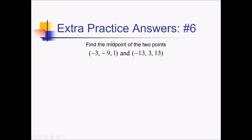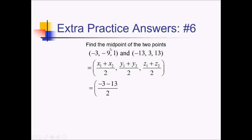On this problem, we're trying to find the midpoint of these two points, so we're essentially going to average all the x, y, and z values together. We've got (x1 plus x2) over 2, and the same thing for the y values and the z values. So then we've got (negative 3 plus negative 13) over 2, (negative 9 plus 3) over 2, and (1 plus 13) over 2. This is negative 16 over 2, which is negative 8; negative 6 over 2, which is negative 3; and 14 over 2 gives us 7.